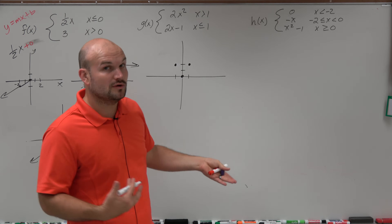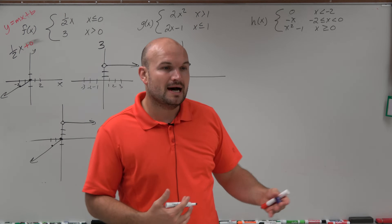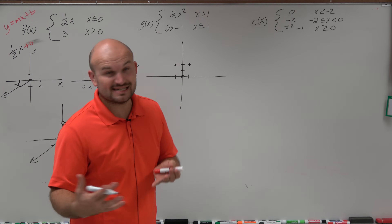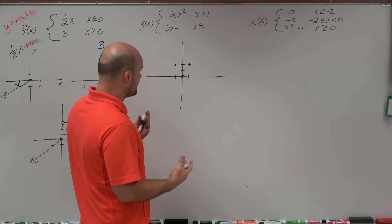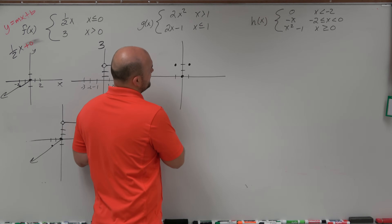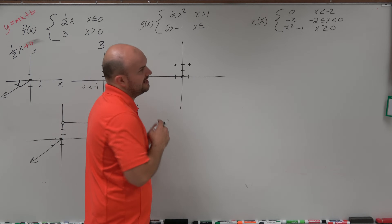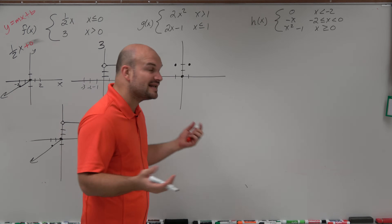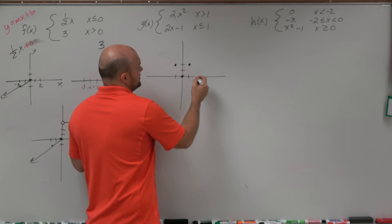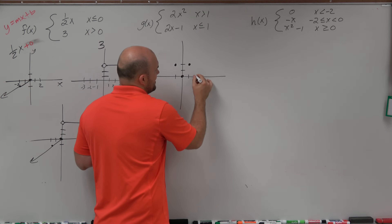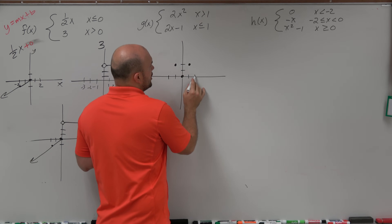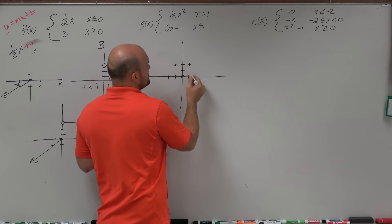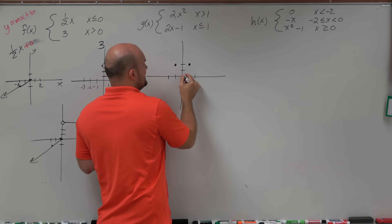I chose some very simple functions, so make sure you have at least the basics of graphing. If you're allowed technology, you could verify my results as well. So it's going to be over two, up four, but then times two — so it would be over two, up eight.